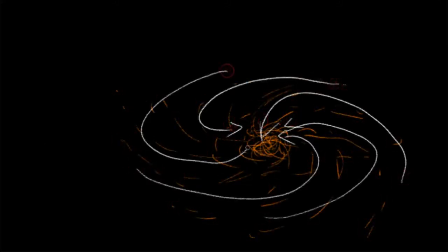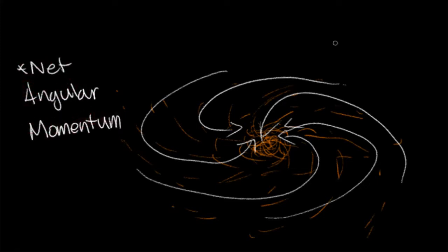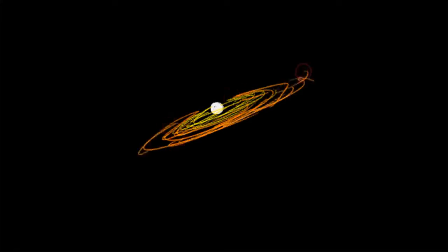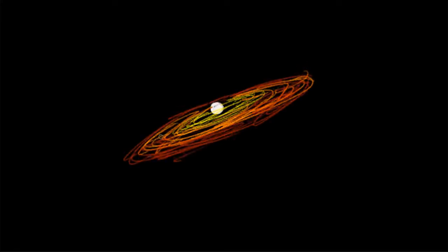As the gas cloud contracts and falls inwards towards the centre, it heats up and starts spinning faster and faster. Over time, the gas cloud flattens into a thin disk with a high density of compressed matter concentrated in the centre.